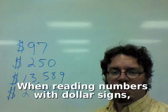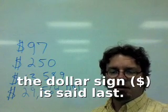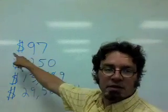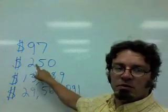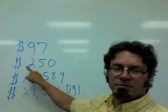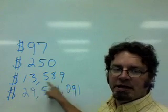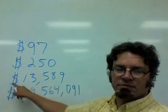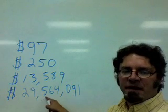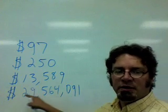When reading numbers with dollar signs, the dollar sign is said last. Ninety-seven dollars. Two hundred fifty dollars. Thirteen thousand five hundred eighty-nine dollars. Twenty-nine million five hundred sixty-four thousand ninety-one dollars.